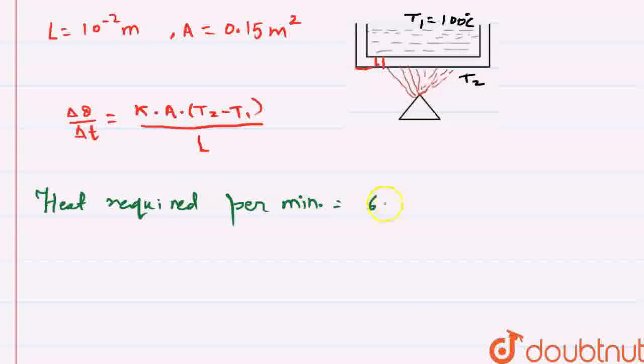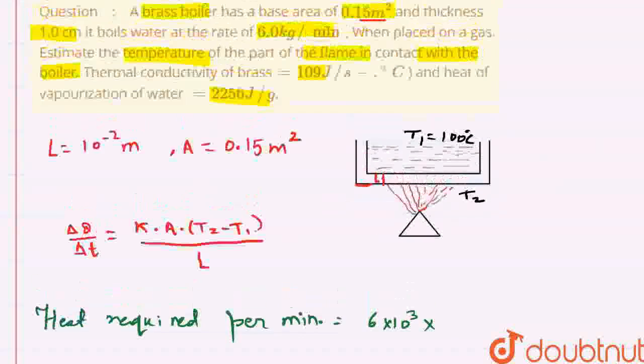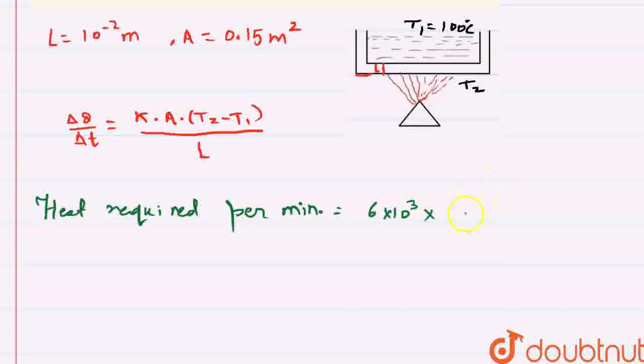In kg, there will be 1000 grams, so 6 into 10 to the power 3 grams into the latent heat of vaporization. So the amount of heat required here is 2256 Joules. This much amount of heat is required per minute. We will evaluate it later.